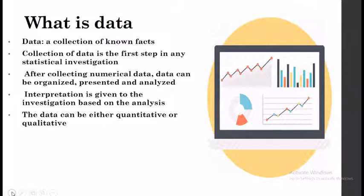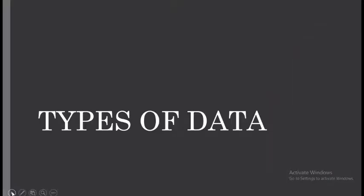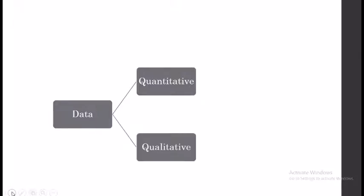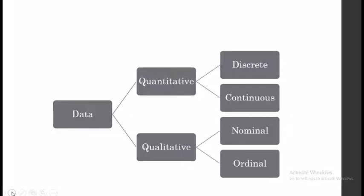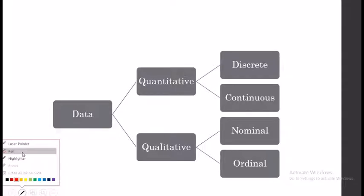Data can be either quantitative or qualitative. Data is divided into two types: quantitative and qualitative. Quantitative data can further be divided into discrete and continuous, whereas qualitative data can be divided into nominal and ordinal. Let's have a detailed look at what quantitative data, qualitative data, discrete data, continuous data, nominal data, and ordinal data are.